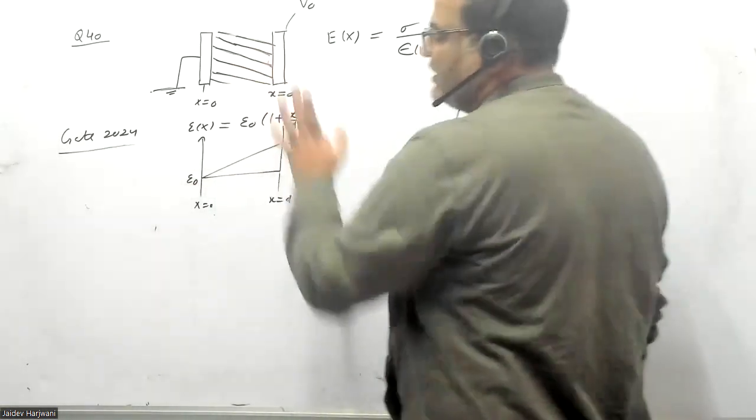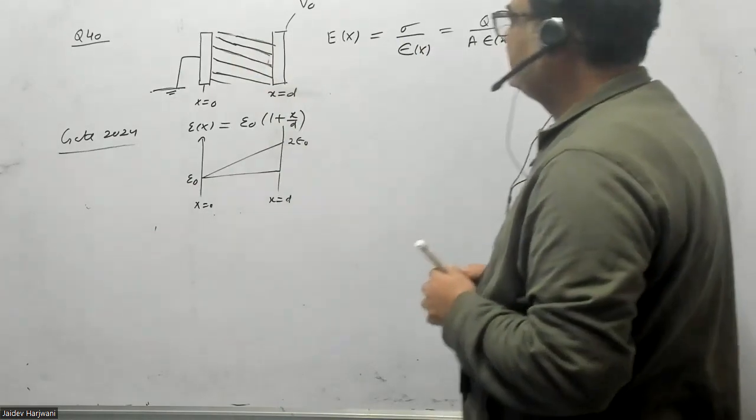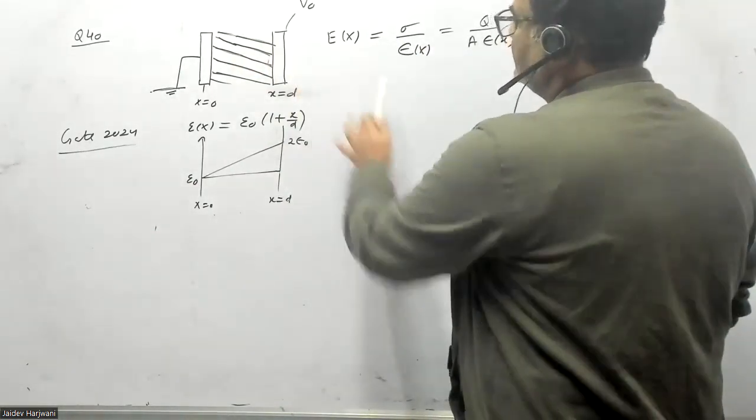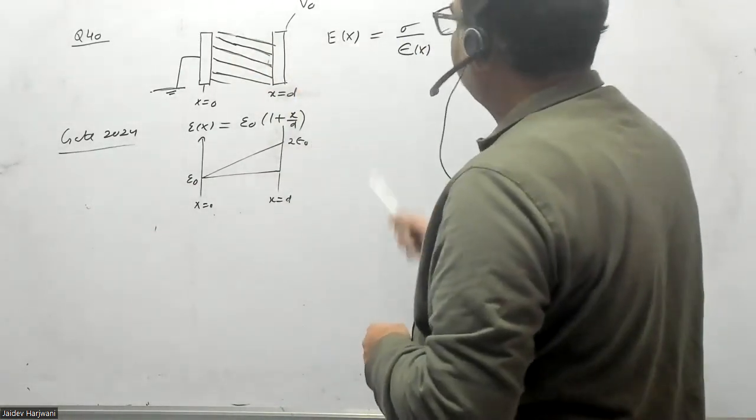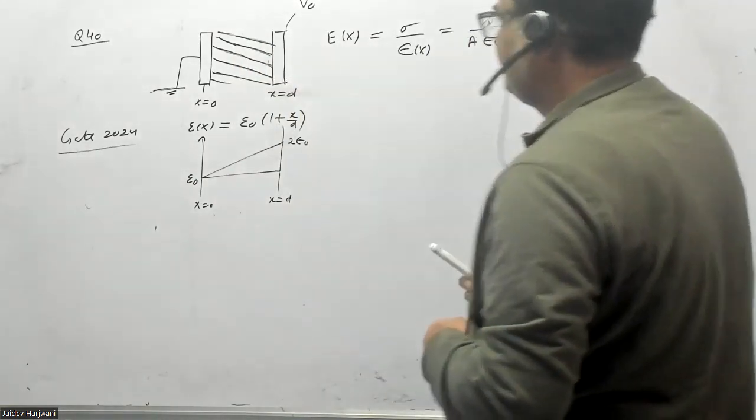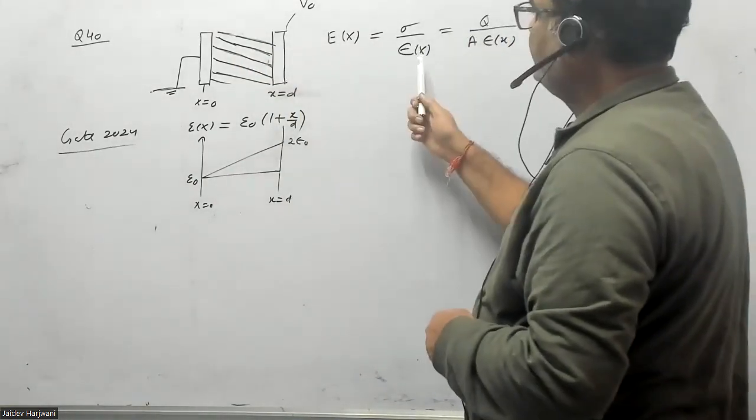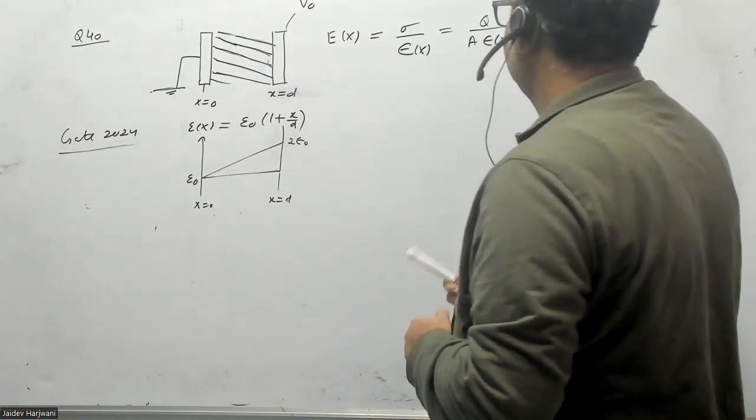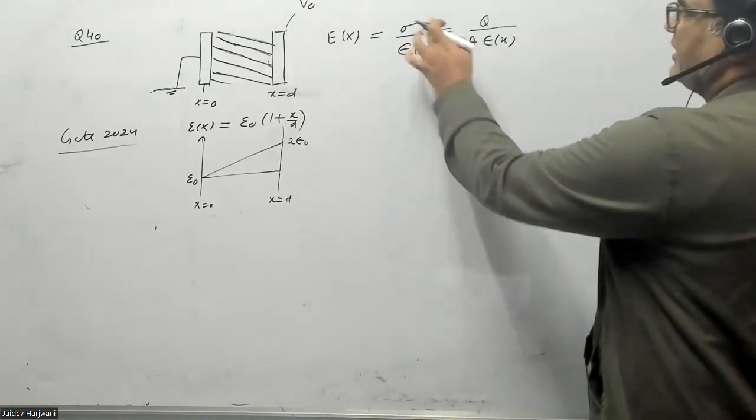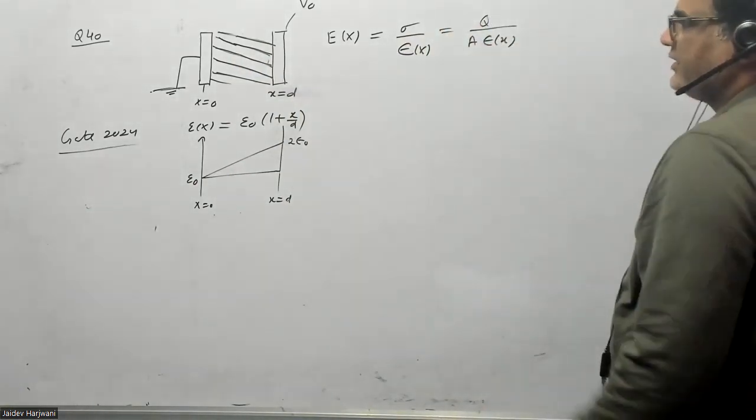We know that because this is a conducting plate, I can write the electric field is given by Sigma upon permittivity, which is a function of X. So E is also a function of X here. Sigma I can also write as Q by A, charge per unit area.